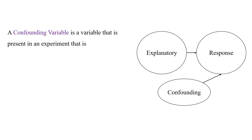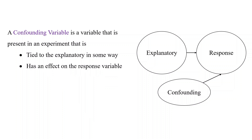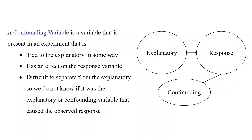A confounding variable is usually present in an experiment. It's tied to the explanatory variable in some way and has an effect on the response, but it's difficult to separate the explanatory variable from the confounding variable. So when we see a response in our experiment, we ask: was that caused by the explanatory variable or the confounding variable?